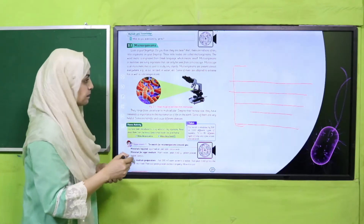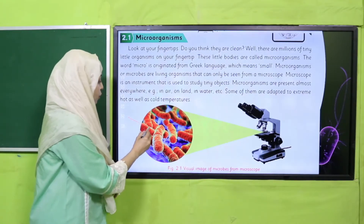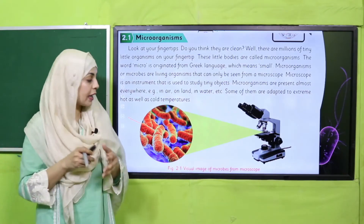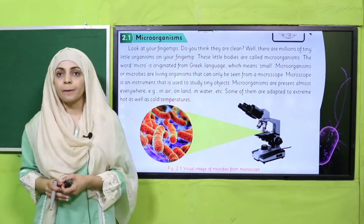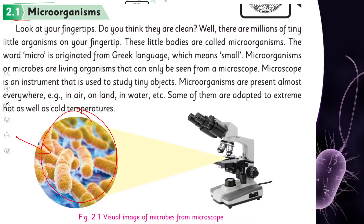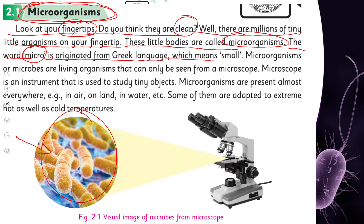Now let's start the reading. Look at the pictures on one side — you can see what microorganisms look like under the microscope. Read with me and put your fingers where I read. 'Microorganisms — look at your fingertips. Do you think they are clean? Well, there are millions of tiny little organisms on your fingertip. These little bodies are called microorganisms. The word micro is originated from Greek language, which means small.'